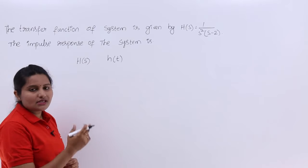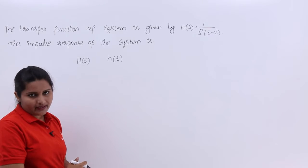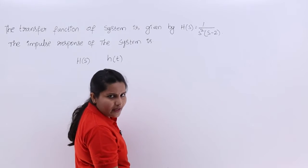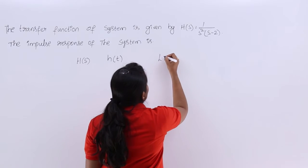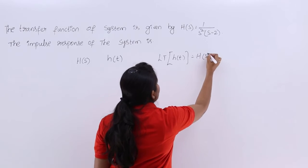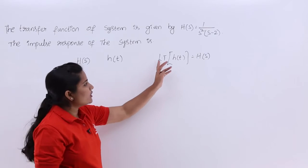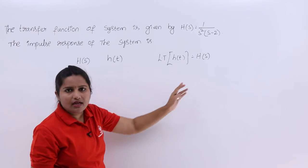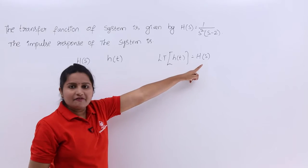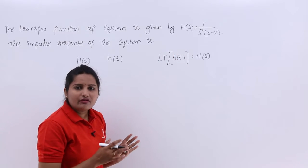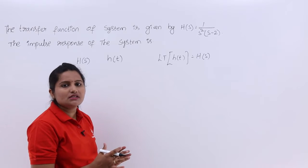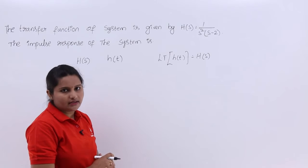The impulse response and transfer function are Laplace transform pairs. If we consider the Laplace transform of h(t), we get h(s). We are going to solve our equation using Laplace transforms because the given transfer function is in the s-domain. Whenever we solve a problem in the s-domain, we need to take all relations as Laplace transform related equations.